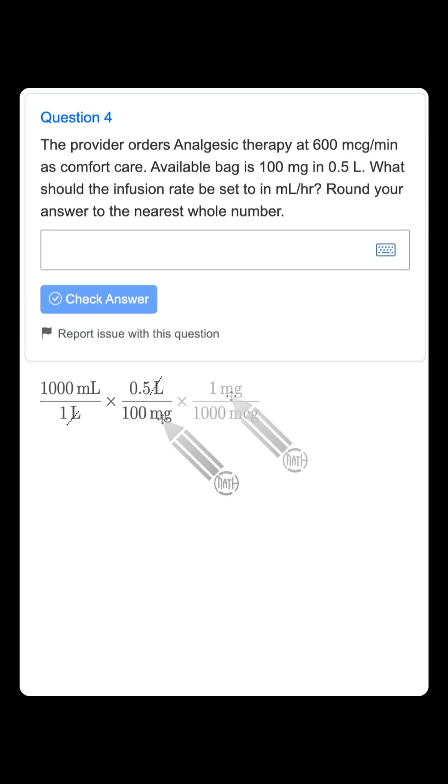We need to get rid of milligrams, so I'm putting milligrams at the top of the next fraction. One milligram is equal to 1000 micrograms. Our milligrams cancel.